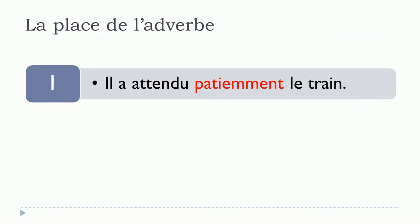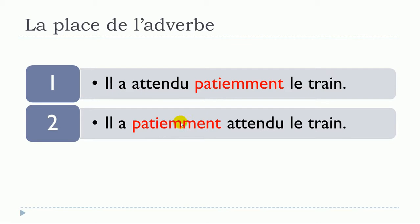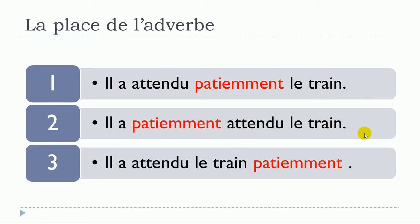That's the first option when constructing this type of structure with a composed tense — two parts. The second option: with the same sentence, it's also possible to put your adverb right after avoir. So: il a patiemment, and then you continue with your participe passé — attendu le train. So the second option is: il a patiemment attendu le train.